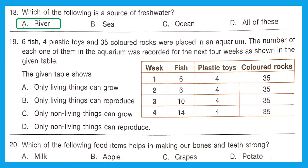Question 19: Six fish, four plastic toys, and 35 colored rocks were placed in an aquarium, and their numbers were recorded for four weeks. Looking at the table, the number of fish increased week by week, whereas plastic toys and colored rocks stayed the same. This shows that fish is a living thing that can reproduce and grow, while plastic toys and colored rocks are non-living. Option B is correct: only living things can reproduce.